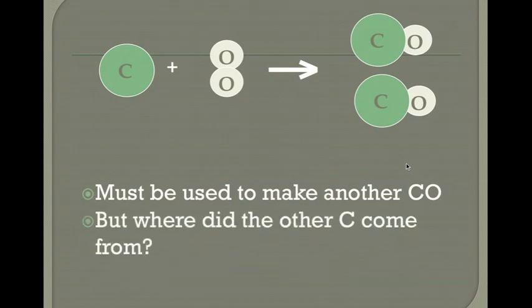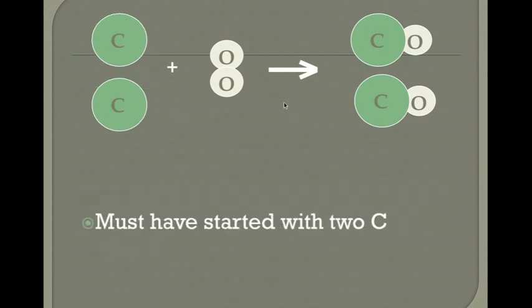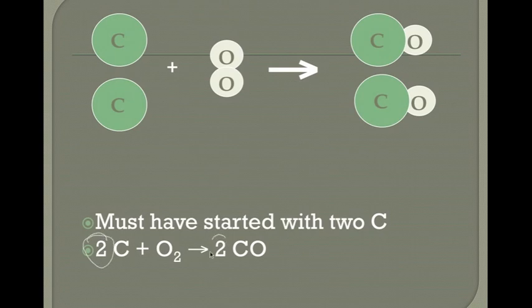What we can do is add another carbon monoxide, which gives us another oxygen. But in the process we've also created another carbon, so we add another carbon on the reactant side. We must start with two carbons if we're going to end with two carbons, and we start with two oxygens and end with two oxygens. We put a coefficient in front of each molecule: two carbons reacting with one oxygen molecule to produce two carbon monoxide molecules. These numbers in front are called coefficients. That's how we balance chemical equations.